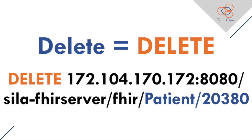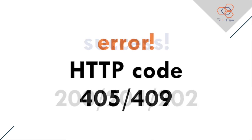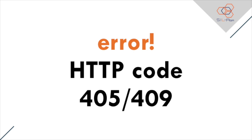To delete a resource, send an HTTP DELETE request to the resource type's respective endpoint. It uses a logical delete, meaning the resource is marked as deleted, will no longer appear in search results, and may be undeleted by updating it again. Upon successful deletion, or if the resource does not exist at all, the server should return either a 200 OK if the response contains a payload, 204 No Content with no response payload, or 202 Accepted if the server wishes to be noncommittal about the outcome. If the server refuses to delete resources of that type as a blanket policy, it should return 405 Method Not Allowed. If the server refuses to delete a resource due to reasons specific to that resource, such as referential integrity, it should return 409 Conflict.